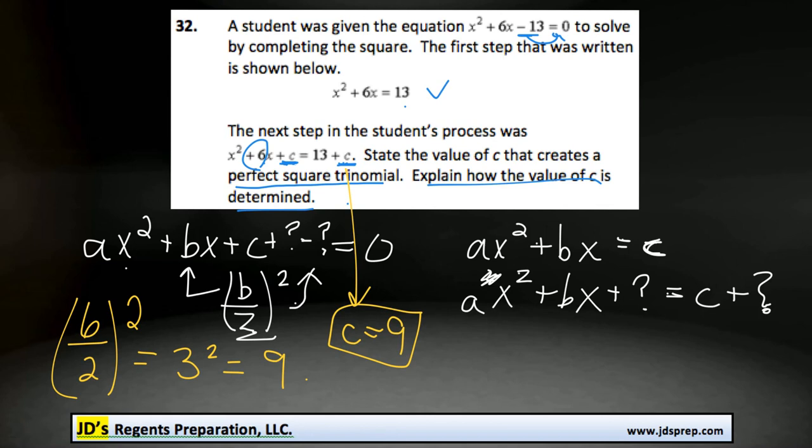And I think the explanation we gave here where you took 6 divided by 2 and squared it is a valid enough explanation of how we found the value of 9. All right, and that's all for this video. I hope it was helpful, and thanks for visiting JD's Regents Preparation.